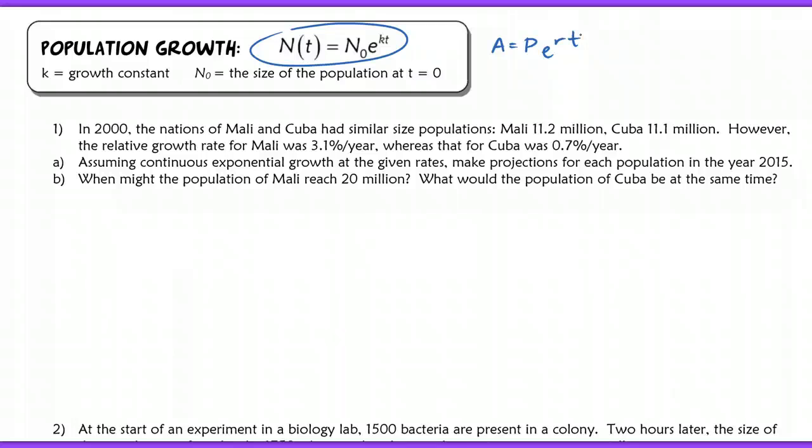We will be solving now for K oftentimes, and that's part of what we're going to do in the second question here. K is your growth constant, whereas we used R before as our rate, our interest rate, our continuous interest rate. N naught, so N sub zero, which is also pronounced N naught, is the size of your population when it starts, so at time equals zero.